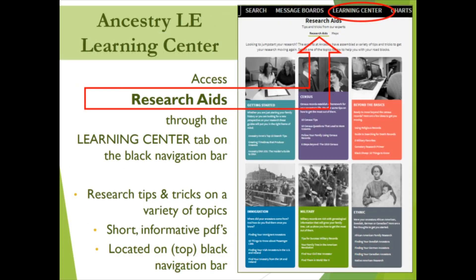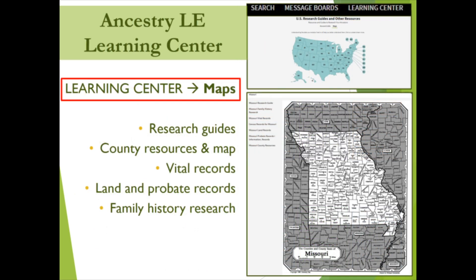Ancestry Library Edition also has something called the Learning Center, accessible through the Learning Center tab on the black navigation bar. These aids include tips and tricks on a variety of topics, sometimes short informative PDFs. There is also a category for maps, within which you can find county resources and maps, vital records, land and probate records, family history research guides, and all sorts of other possibilities to explore.